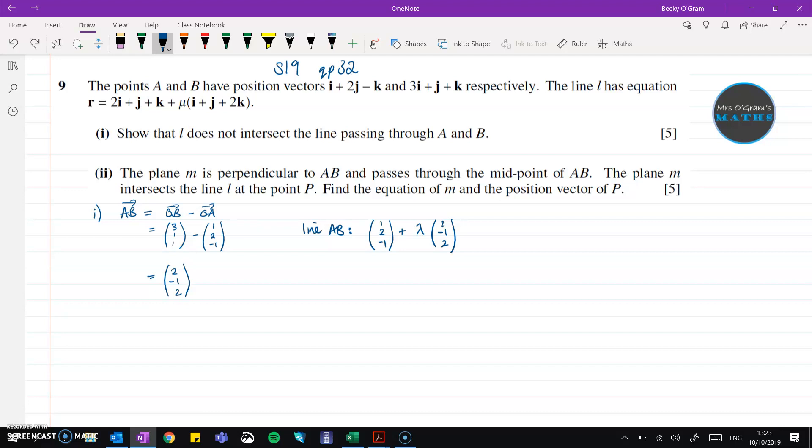Now if we were looking for points of intersection we would set that equal to l. So that's what we're going to do. We're going to work as if we were trying to find a point of intersection and then show that it can't happen.